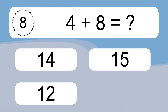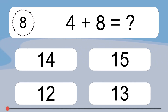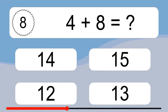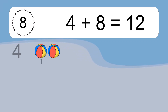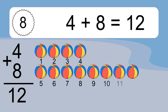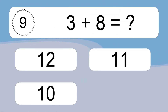4 plus 8 equals what? 4 plus 8 equals 12. Let's count it. 1, 2, 3, 4, 5, 6, 7, 8, 9, 10, 11, 12.